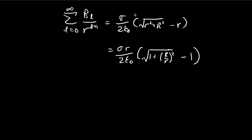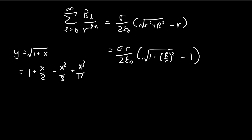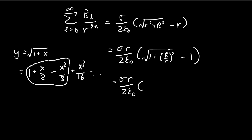We'll use a Taylor series expansion. If we have a function y equal to the square root of 1 plus x, the expansion gives an expression you can look up or derive yourself. We only need the first three terms because the question only requires the first three terms of the potential.